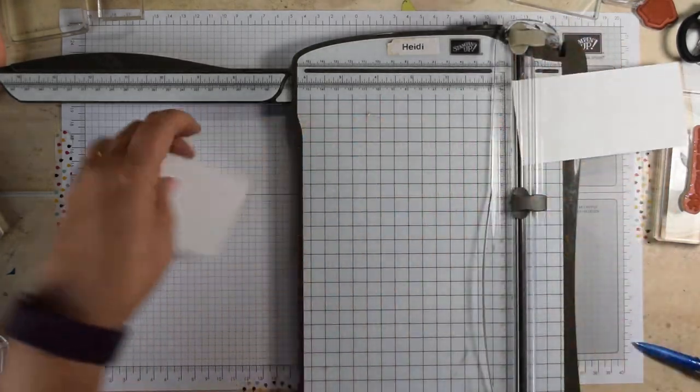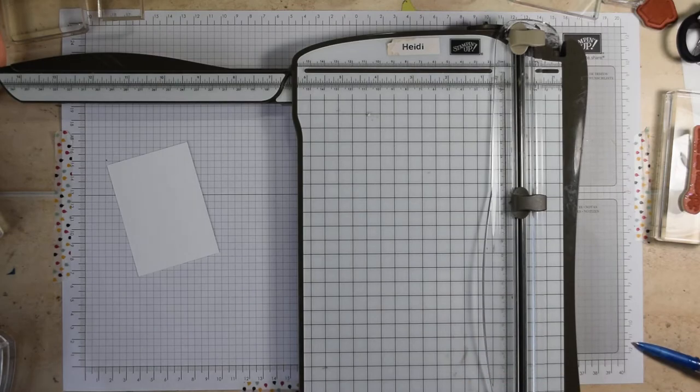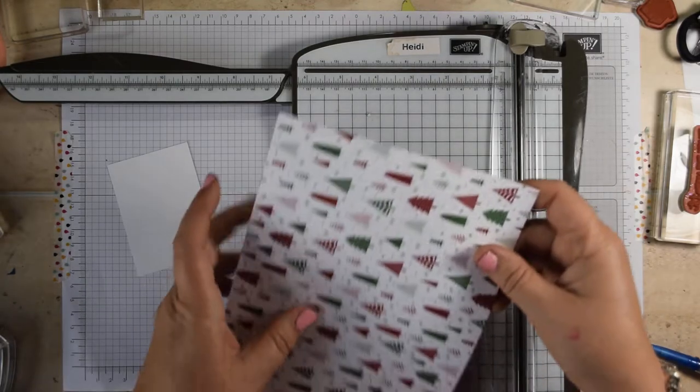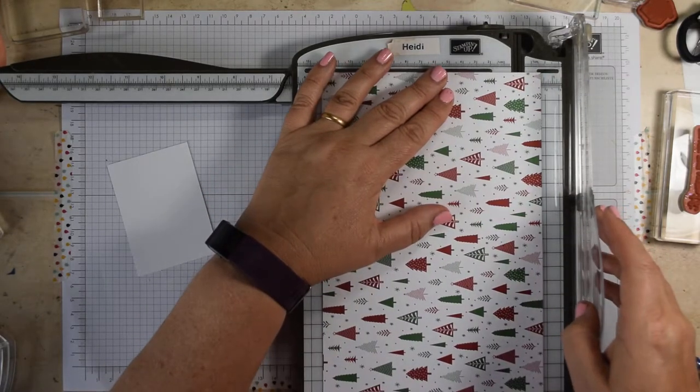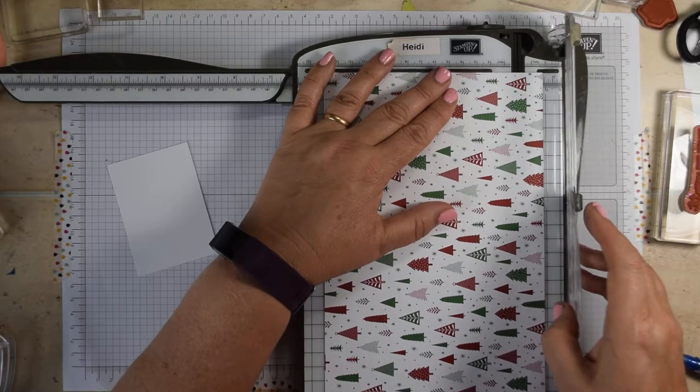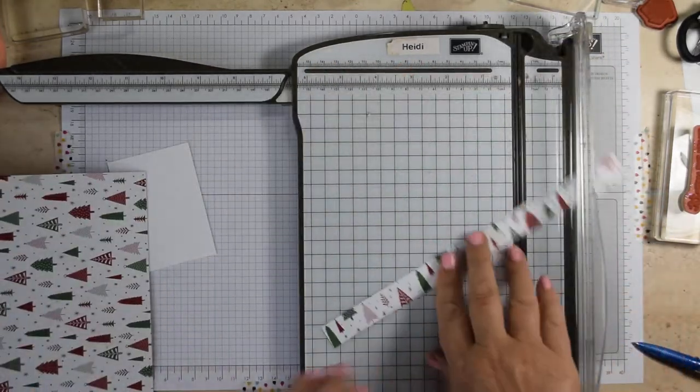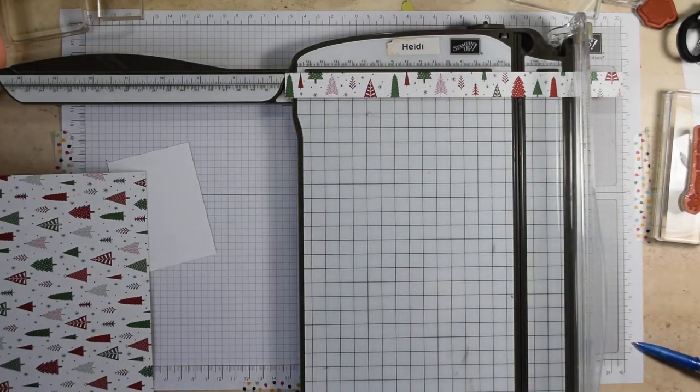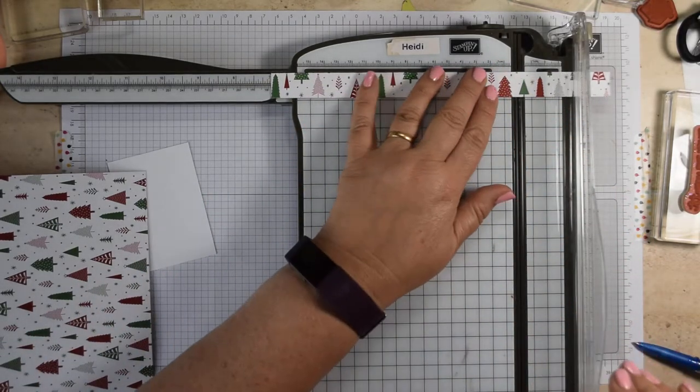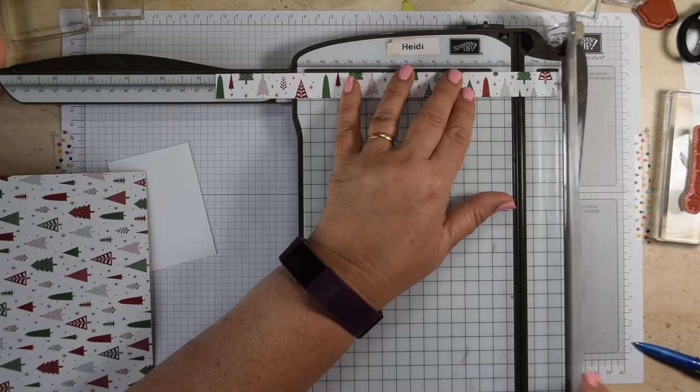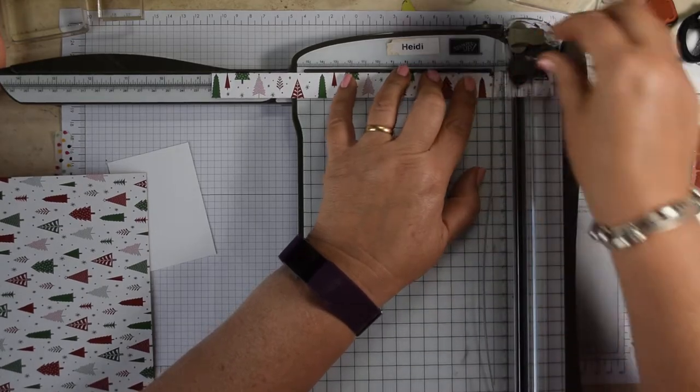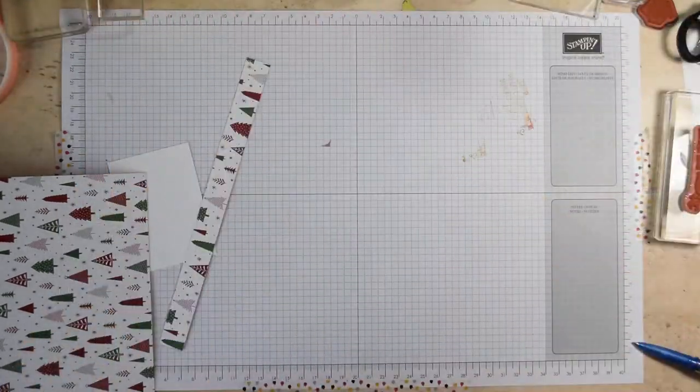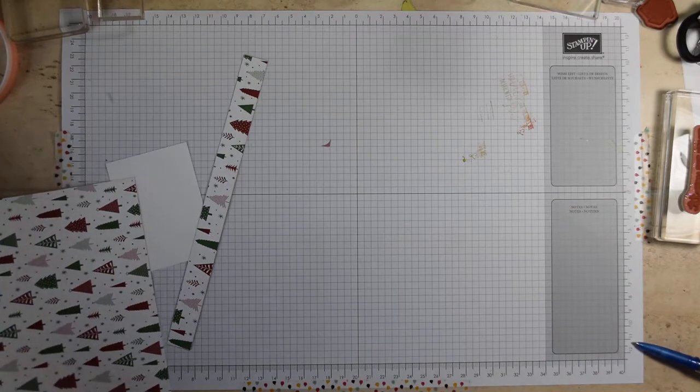And that's for our stamping. And then you're going to need a strip of Designer Series Paper which I've done to about 1.8 by round about 21 centimeters or so. You know, whatever you happen to have because it doesn't matter if it overlaps on the back. So that's all our cutting and scoring done.